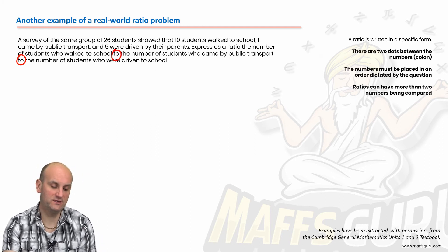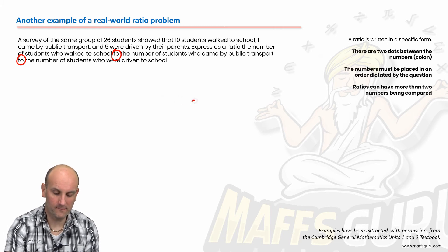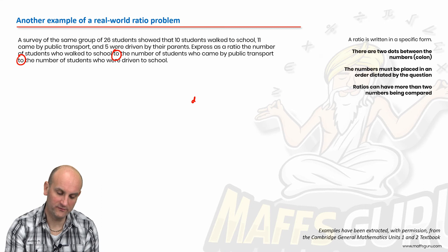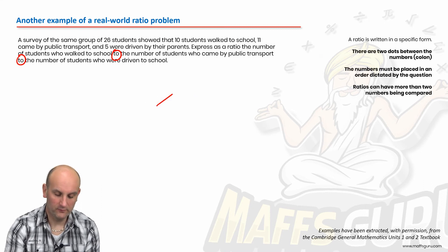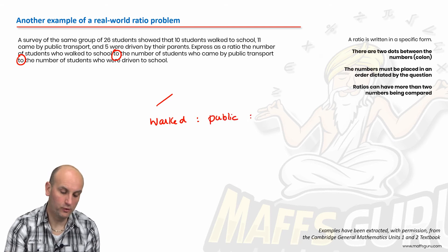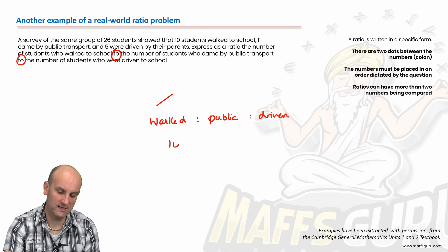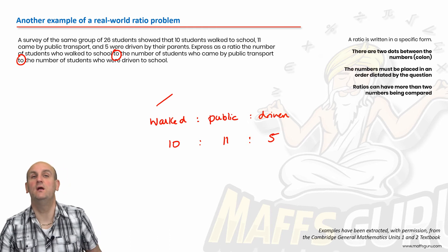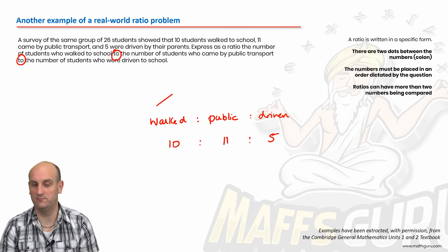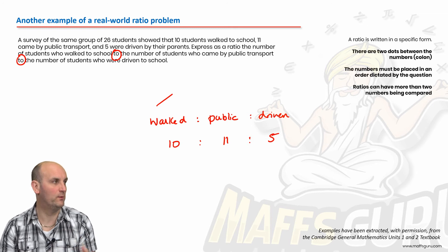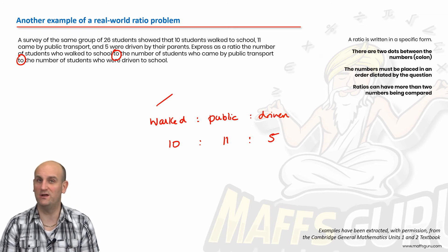The order here is important. Express the ratio of the number of students who walked to public transport to driven. Don't always expect the question to write it in the right order. So let's just check. 10 students walked to school, 10, dot dot, 11 came by public transport, dot dot, and 5 were driven by their parents. Now in this situation, I wouldn't be able to cancel those down if I wanted to try and simplify or show a simplified ratio, because there isn't a number that divides into 10, 11, and 5. Well, there's a number 1, but that won't necessarily help you. So in this situation, that would be my ratio. Stuff's really easy, yeah?